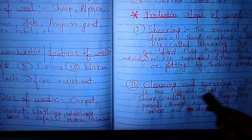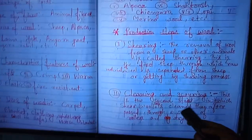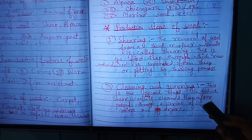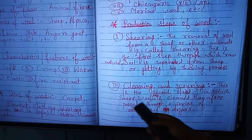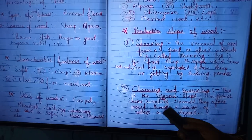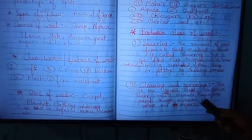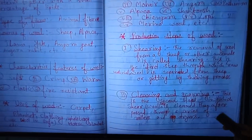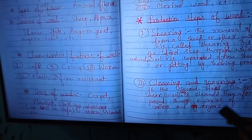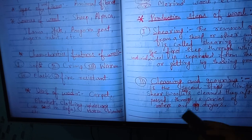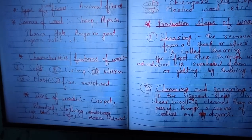Second: cleaning and scouring. This is the second step in which the sheared wool or hair is cleaned and then passed through a series of rollers and combs.